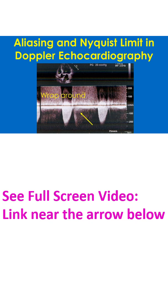This high pulse repetition frequency Doppler recording shows an aortic regurgitation jet above the baseline with a cutoff at the upper end and a wraparound seen below the baseline. Aliasing is seen here because the limit has been set just above 200 cm per second, while the velocity of the jet is higher than that.